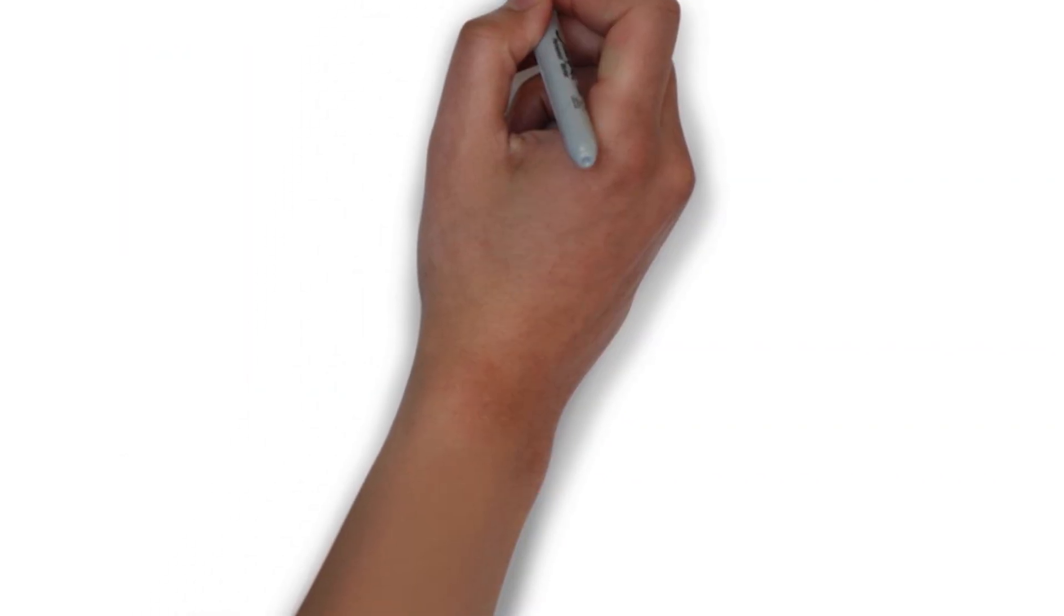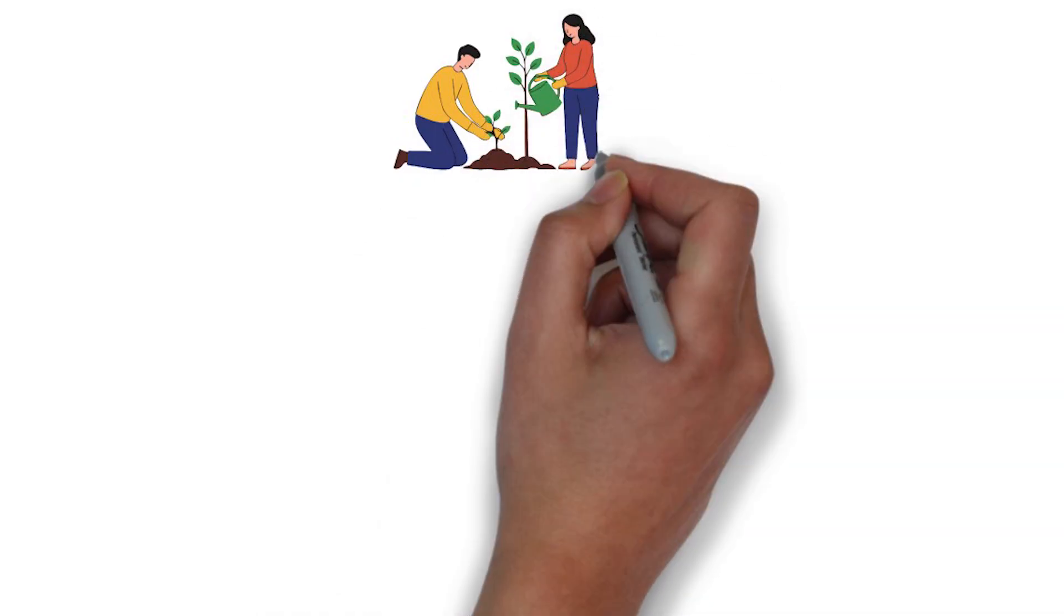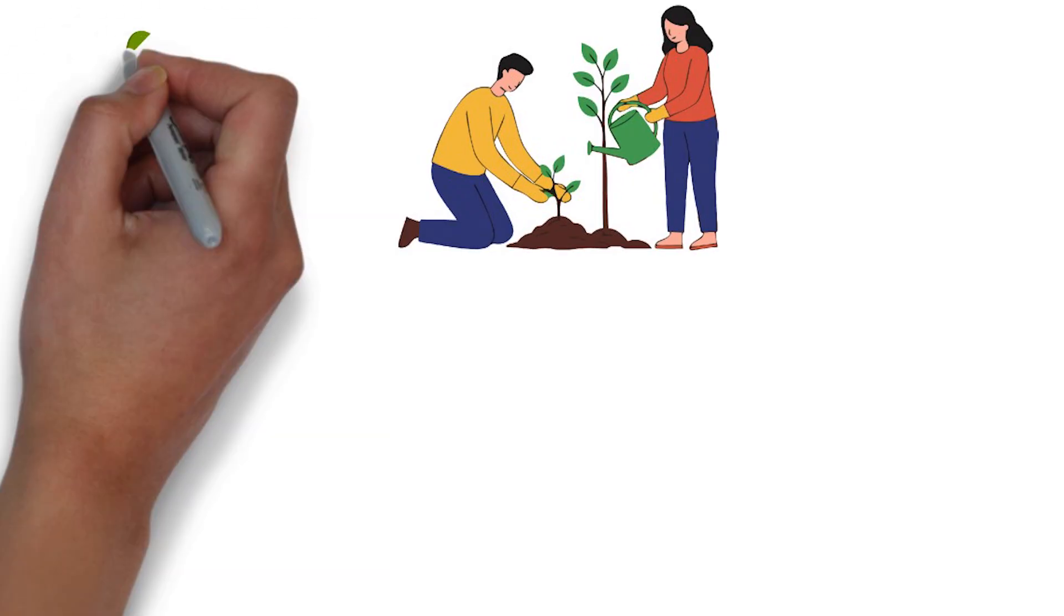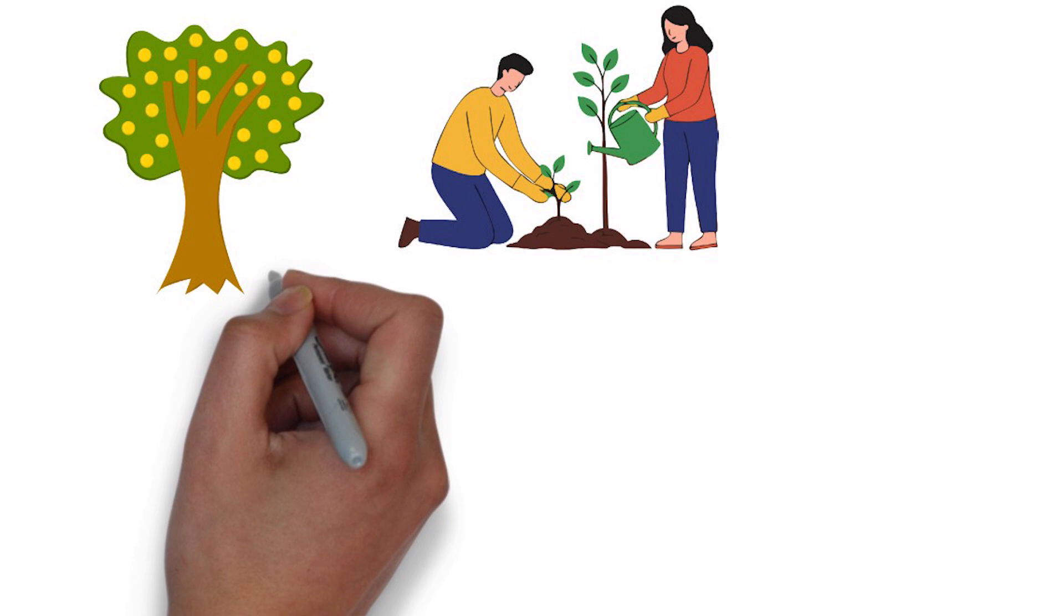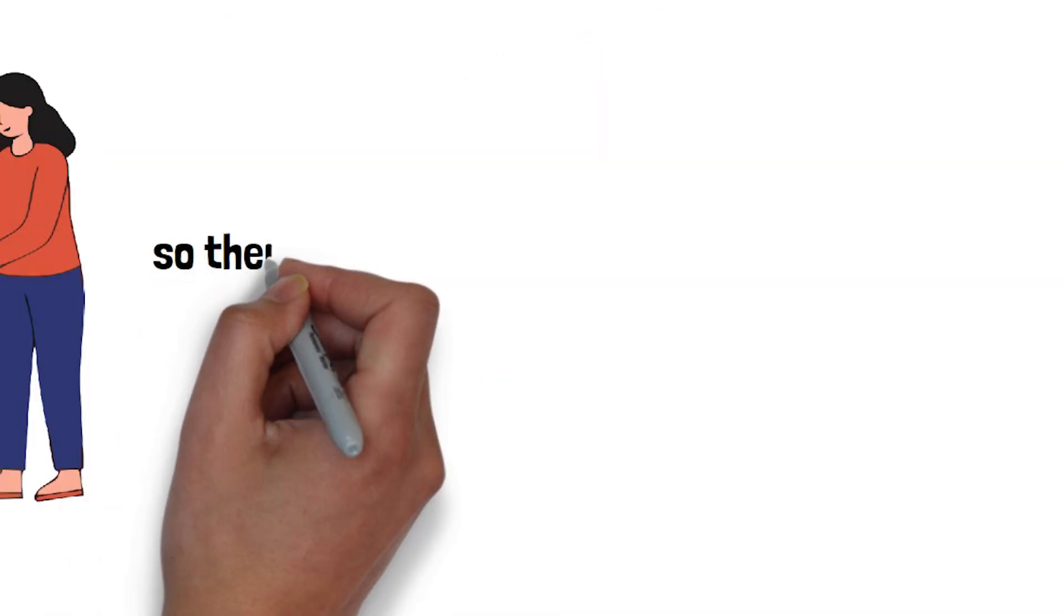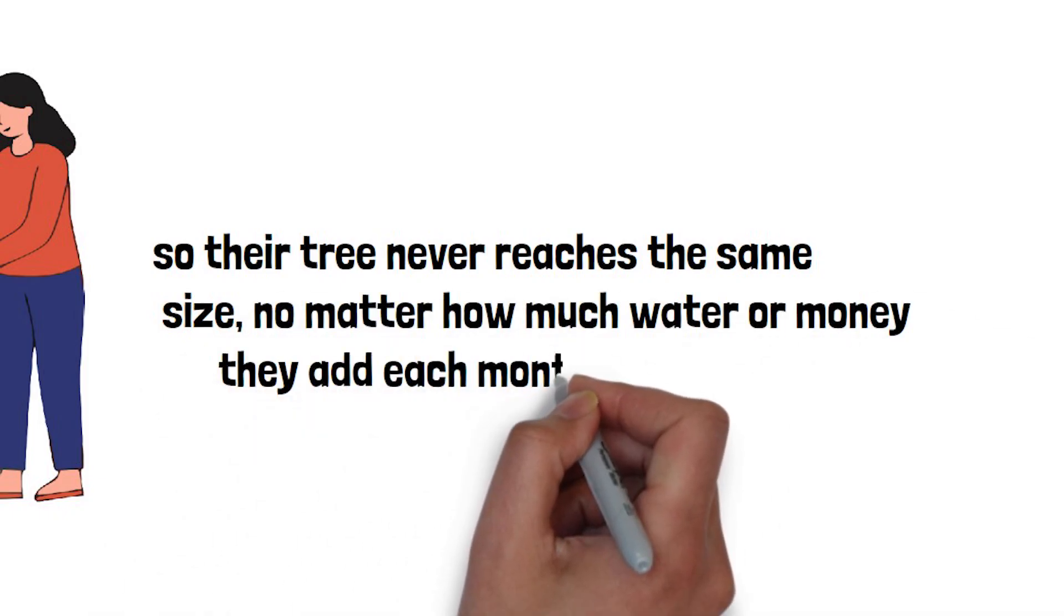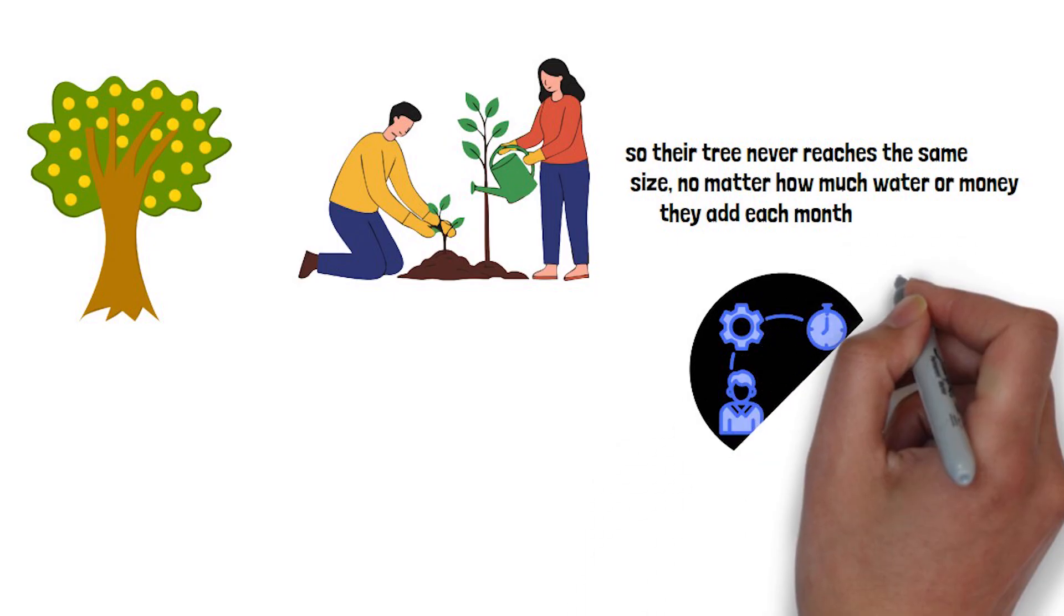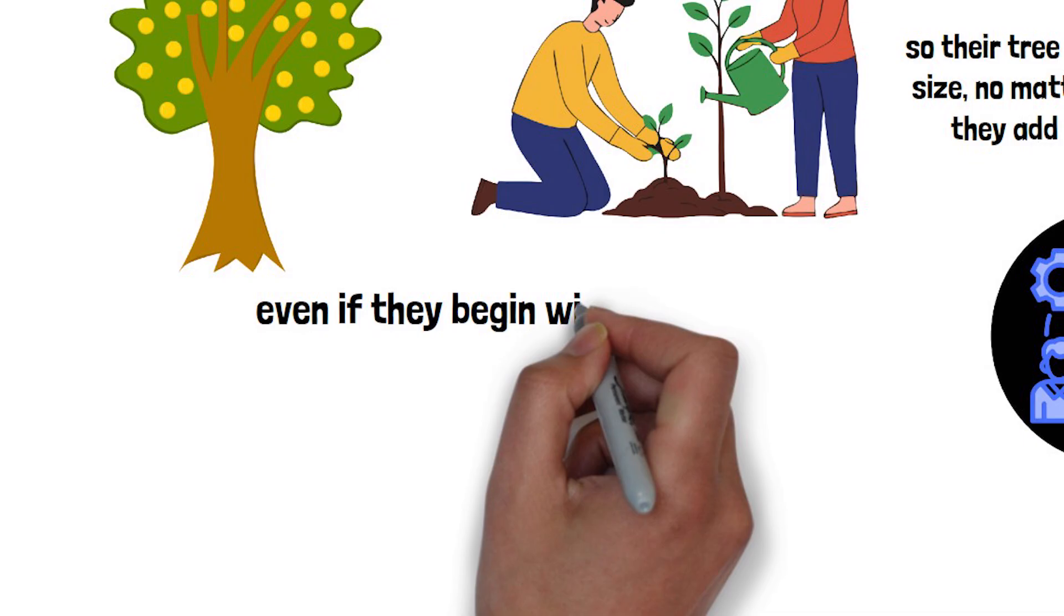There's another advantage you can't buy later, and it's one that can outweigh even a higher rate of return. Think of it like planting a tree. Alex's seeds go into the ground earlier, allowing roots and returns to spread unnoticed in the early years. By the time the later years arrive, growth accelerates because it's compounding on a much larger base. Jordan plants later, so their tree never reaches the same size, no matter how much water or money they add each month. This is the invisible advantage of time.